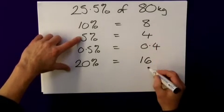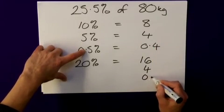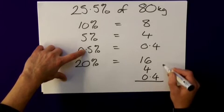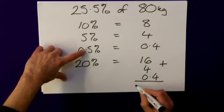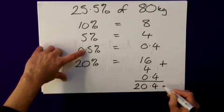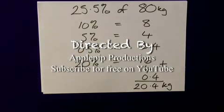I need the 5%, and I need the 0.5%. And my total is all of that added together, which is 20.4. Not forgetting units, kilograms. I hope that helps.